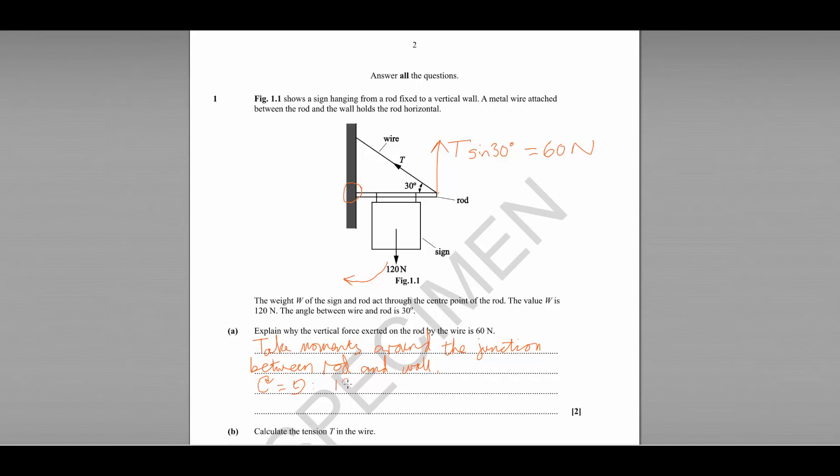So we have 120 multiplied by half the length 0.5 L and that's going to be equal to this force here which is causing an anti-clockwise turning moment. Calling that T sine 30 for consistency multiplied by L. We can cancel the L's.